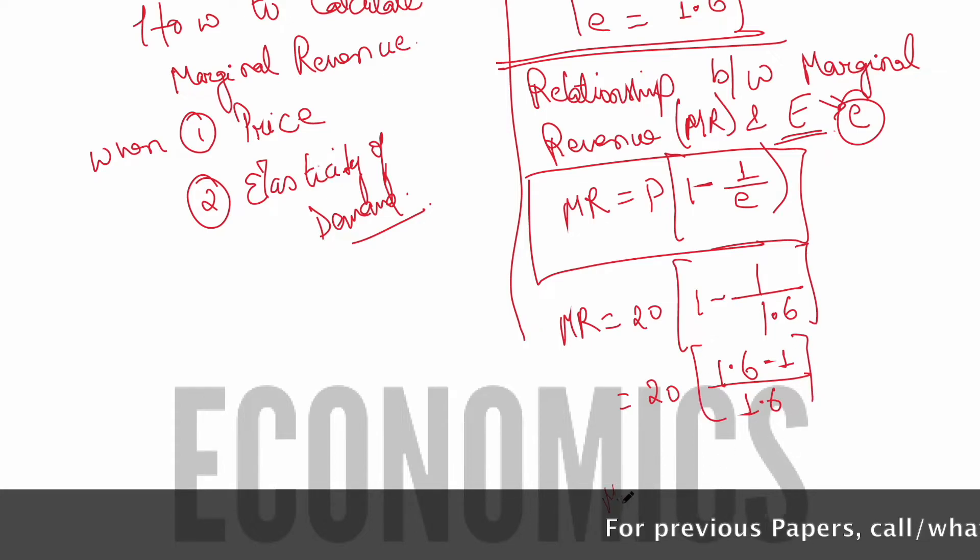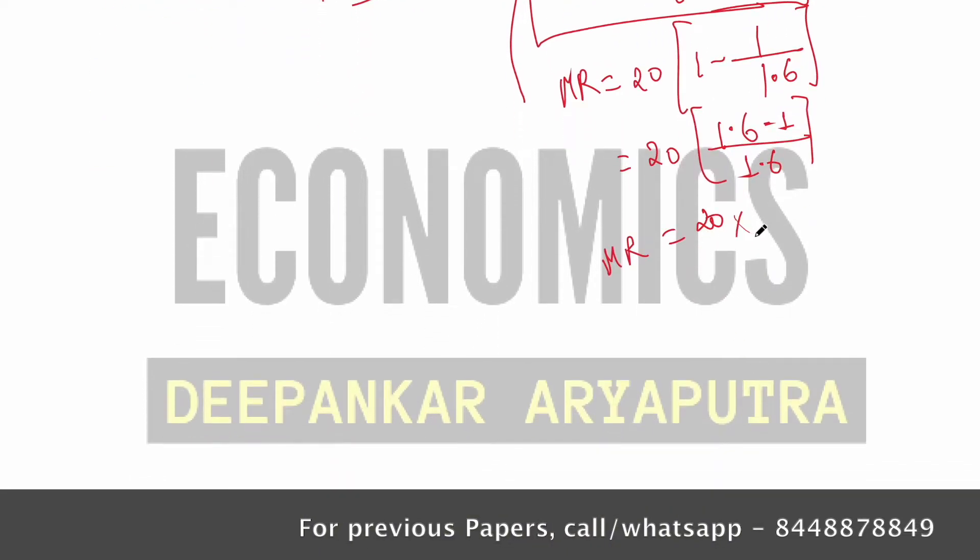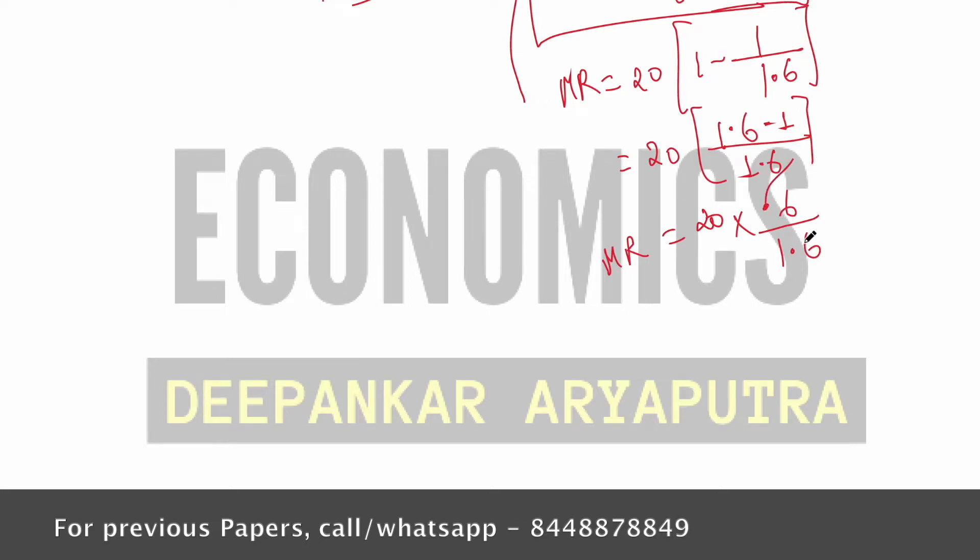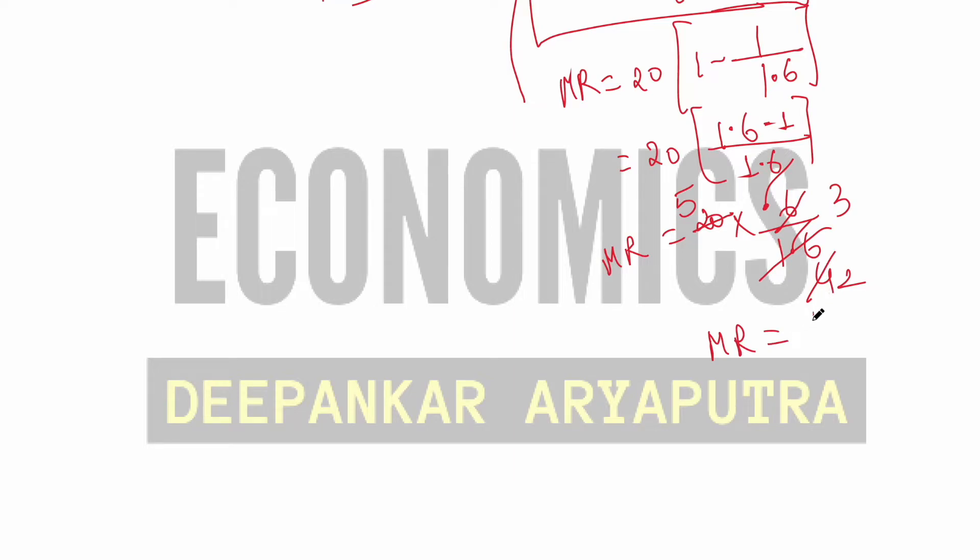Or we get MR equals 20 into 0.6 by 1.6. So we can cancel out this decimal part, so this is 16, this is 20. We can divide by 4, so this is 5, again by 2, so this is 3.